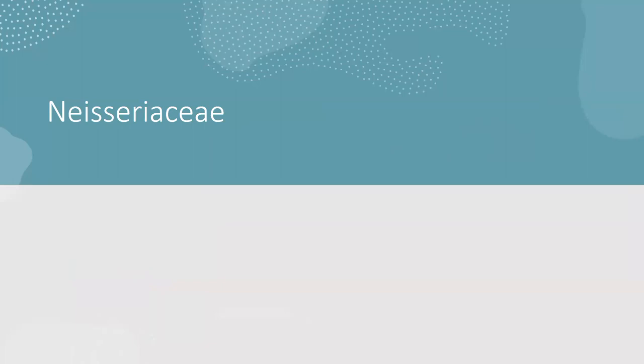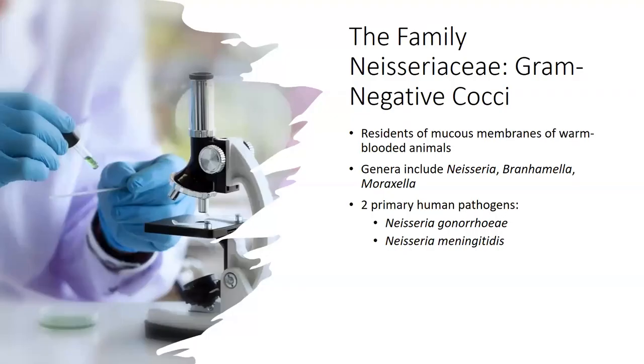We'll get back into some bugs. I put a table on the board which I'll talk through in a second, but we're going to finish up our discussion on cocci bacteria. Neisseria is our first gram-negative cocci and one of the more important gram-negative cocci to know. The Neisseria family are gram-negative cocci that like to live in mucous membranes.